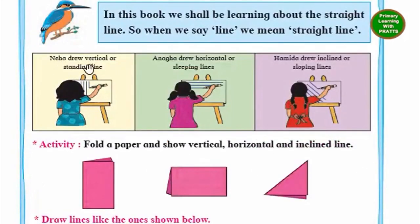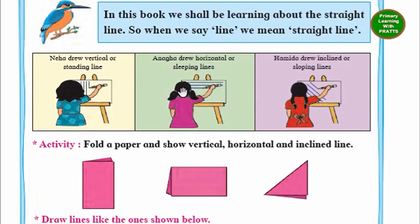Neha drew a vertical or standing line. Anaga drew horizontal or sleeping lines — she is drawing lines like this, so they are sleeping lines. Hamida drew inclined or sloping lines, drawing lines in an inclined slope.